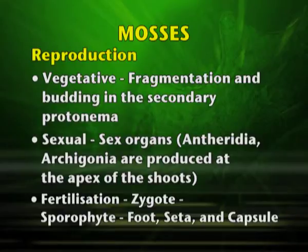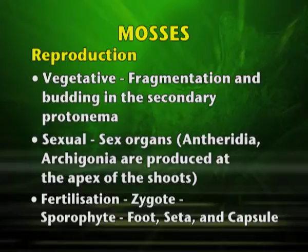After fertilization, the zygote is formed which develops into the sporophyte. This sporophyte then forms foot, seta and capsule.